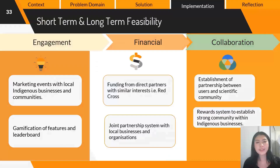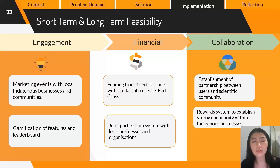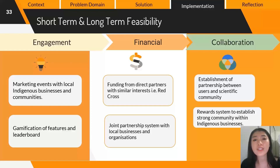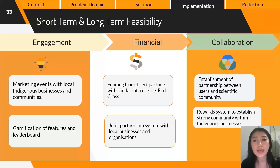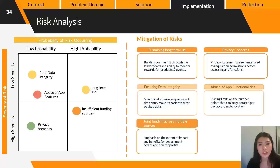In the initial rollout of Custodian, we plan to market in collaboration with local and indigenous businesses and organizations to widen engagement with diverse user groups. The gamification elements will be a sole focus to ensure users understand they can redeem rewards for their efforts on a consistent basis, keeping them returning to the app. Financially, we propose partnerships with government bodies and non-for-profit sectors with aligned interests. The leaderboard is kept as a long-term feature to build community and friendly competition, and the messaging function exemplifies how big an impact Custodian users are making on Australia's climate change response.